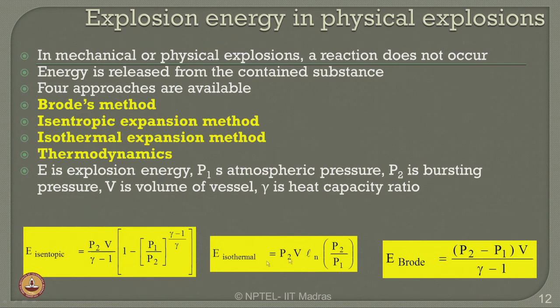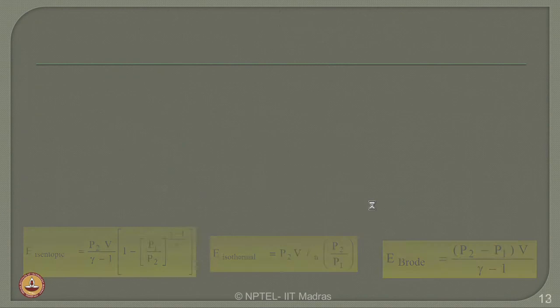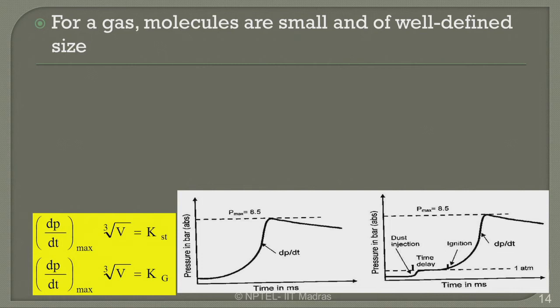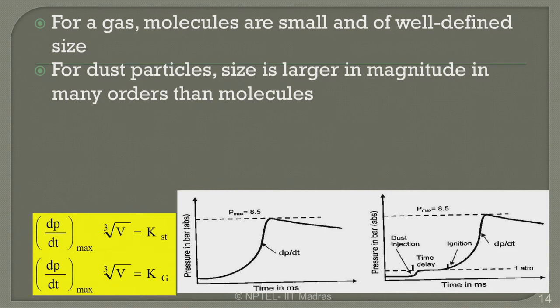Using the isentropic, isothermal, or Brod's equation, E is the expression energy, P1 is the atmospheric pressure, and P2 is the overbursting pressure resulting from the explosion. V is the volume of the vessel and mu is the heat capacity ratio. Alternatively, explosions can also result from dust and gas expansions. For gas, molecules are small and well defined in size, whereas for dust particles, size is large and of many orders of magnitude compared to gas molecules.